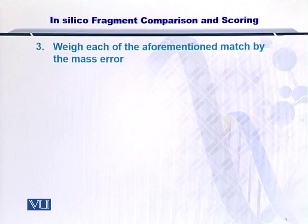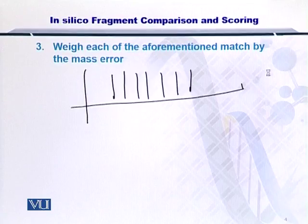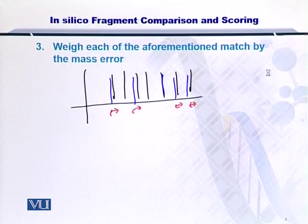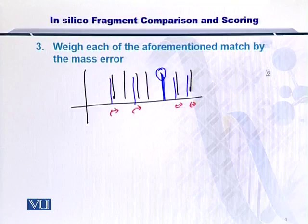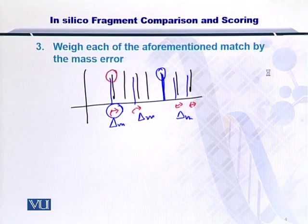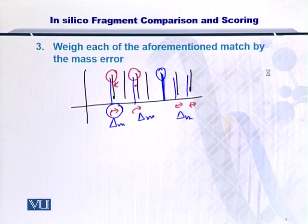Next, we weigh each of these scores with the mass errors. As you would have noticed, while comparing the experimental and the in silico masses, there is a slight error between these comparisons. It is quite rare that you arrive at an exact match. So, you have to see how far your peak is from the in silico spectrum. You can measure this quality by simply looking at the mass difference that exists between each of these peaks. For example, this peak is closer to the in silico peak as compared to this peak wherein the distance or the mass difference between the two peaks is large.